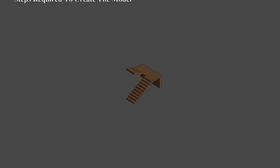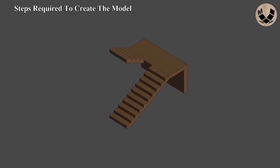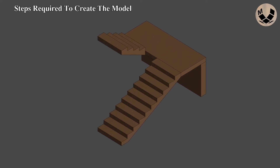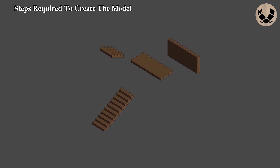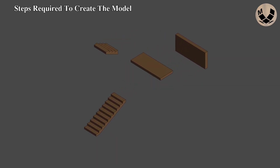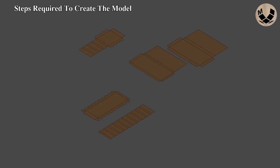First I am going to summarize the steps required to create a physical model of the stairs. The first step is to draw a 3D model of the stairs. While modeling, make sure to divide the model into a few main parts to make the building process of the physical model easier. After that, those parts are unfolded into a 2D plane in order to be printed on card paper.